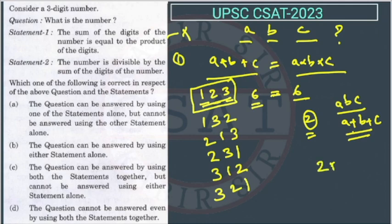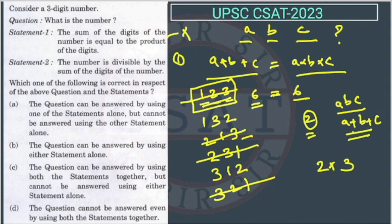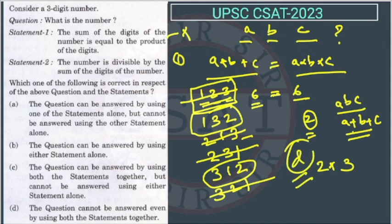Divisibility by 6 means the number must be divisible by both 2 and 3. Divisibility by 3 is satisfied by all six arrangements since digit sum is 6. For divisibility by 2, the last digit must be even, so only 132 and 312 qualify. We still have two possible numbers, so we cannot determine the unique number even using both statements together. The answer is option D.